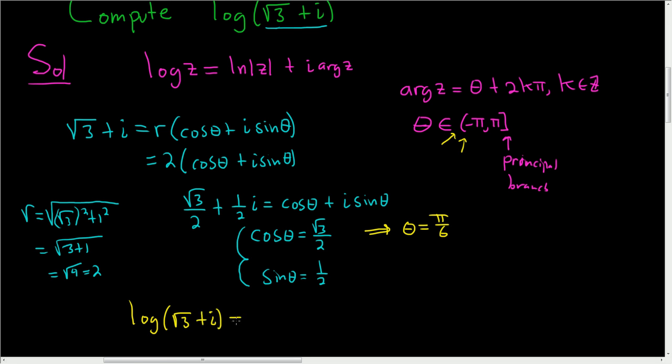this is the natural log of the modulus. And we said the modulus was 2. So 2 plus i, parentheses, and then arg z. Well, here's arg z and theta is pi over 6. So all you do is plug in the pi over 6 and then you add the 2k pi.